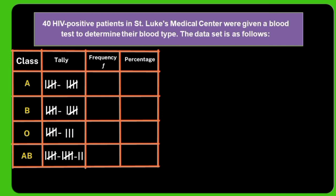The next step is to get each percentage. We can compute this using the formula: Percentage = (Frequency ÷ N) × 100%. Remember that the total of all percentages is always 100%. Let's start with the first frequency: 10 ÷ 40 = 0.25, then 0.25 × 100% gives a percentage of 25%. The second frequency is also 10 ÷ 40 = 0.25, so also 25%.